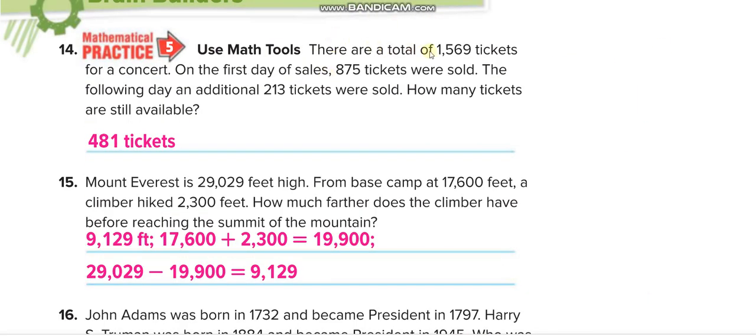Here there are a total of 1,569 tickets for a concert. On the first day of sales, 875 tickets were sold. The following day, an additional 213 tickets were sold. How many tickets are still available? So first you add these two.